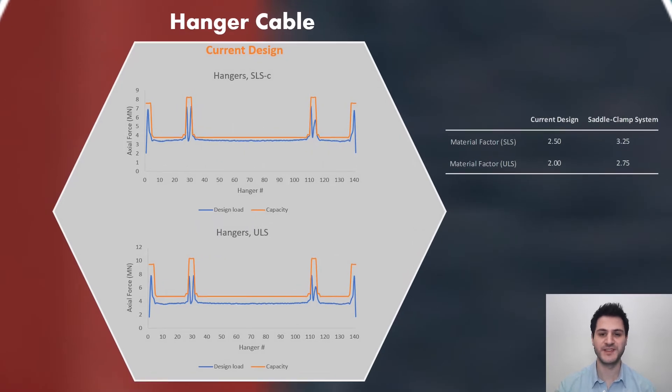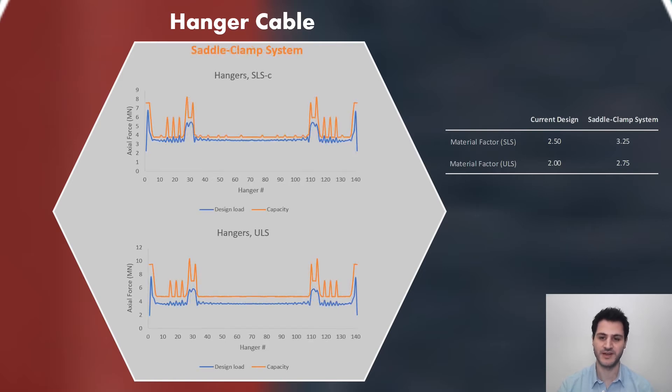Similarly, graphs show design load of SLS and ULS cases taken from Global Analysis Model 1 for current design. Release strands from main cable will also serve as a hanger cable. So, they should have a capacity as much as hanger cables of the current design. And as you can see, hangers have fluctuating design loads. So, required number of strands for main cable and transformed hanger cables are deriving parameters of the system.